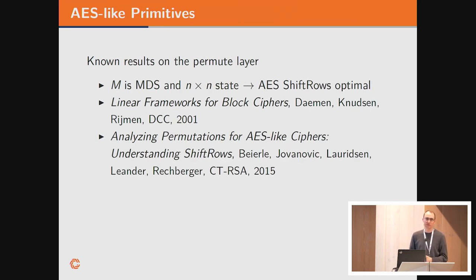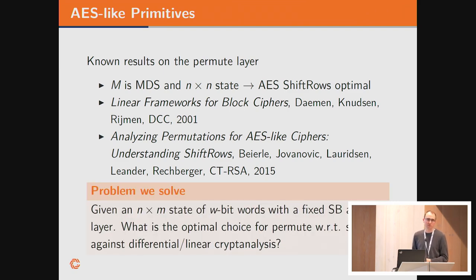There are some results known on this. For the case of AES, we know if we have a square state and the matrix is MDS, then shift rows will be optimal. There's also been some additional work on this where we look at other shapes of states and other properties of this mixed column. The problem that we solve in this paper is: if you're given an N times N state and we fixed the mixed columns, what is actually the optimal choice for permutation with respect to differential and linear cryptanalysis?